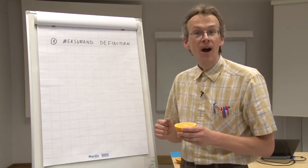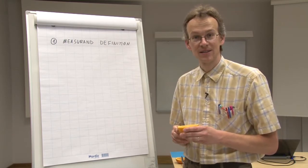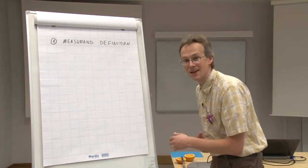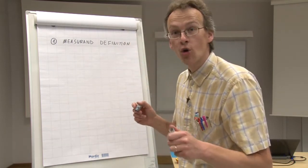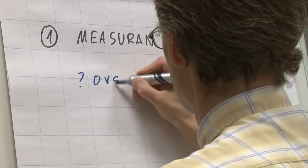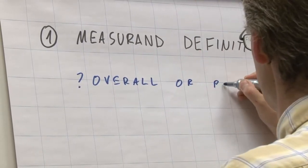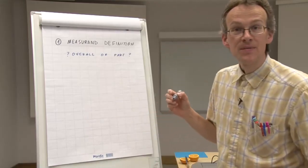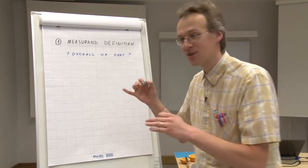Therefore, for defining the measurement in the case of analysis of pesticides in the orange, the following decisions have to be made: whether it's overall orange or some part of it. If it is some part, then which part? If it's only peel, then which layer of the peel?